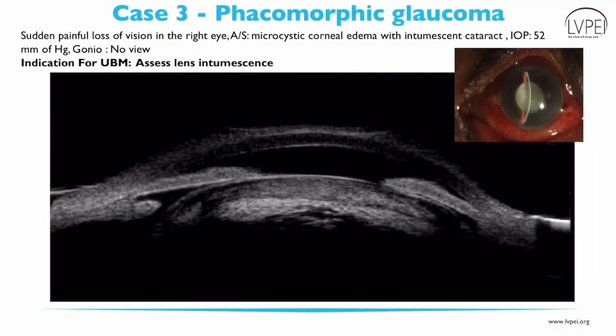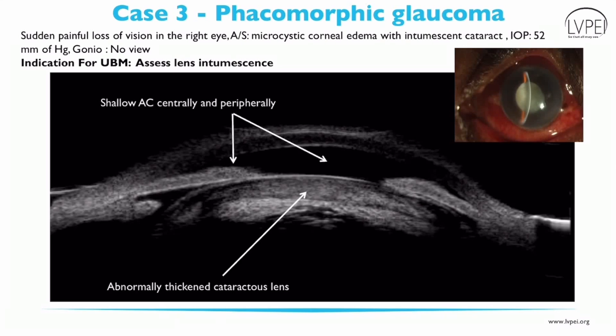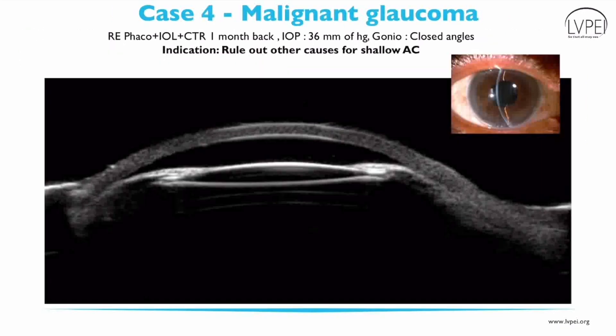This patient presented with findings of microcystic corneal edema with intumescent cataract. UBM showed an abnormally thickened cataractous lens causing anterior push on the iris, leading to shallow anterior chamber centrally and peripherally, thereby confirming the diagnosis of phacomorphic glaucoma.